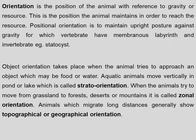Object orientation takes place when the animal tries to approach an object, which may be food or water. Aquatic animals move vertically in a pond or lake — this is called strata orientation. When animals move from grassland to forest, deserts, or mountains, it is called zonal orientation. Animals that migrate long distances, like cranes, generally show topographical or geographical orienting.